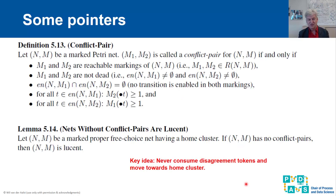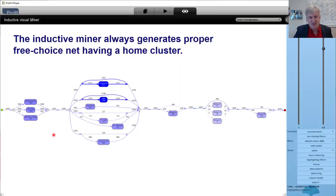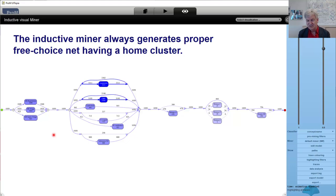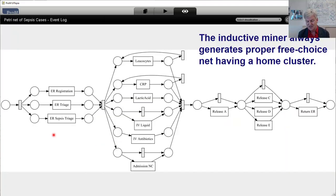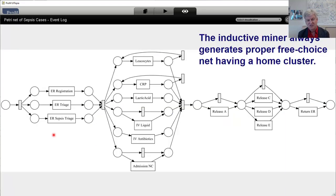That summarizes the key result of the paper. To better connect to process mining and workflow modeling: process discovery techniques like the inductive miner always generate free choice nets having a home cluster. So this is not exotic at all. We can see such a net in a BPMN-like visualization and the corresponding Petri net visualization — and such a Petri net matches the requirements of the theorem.